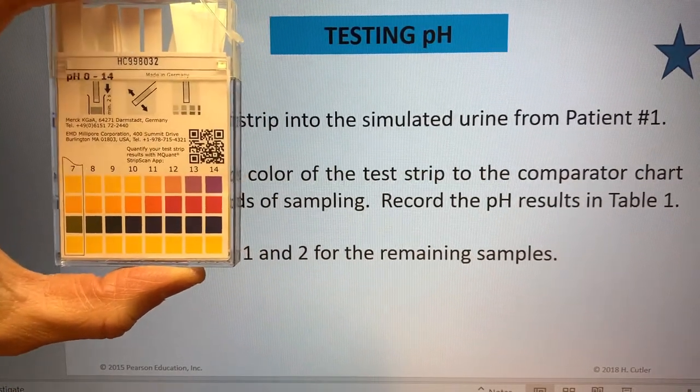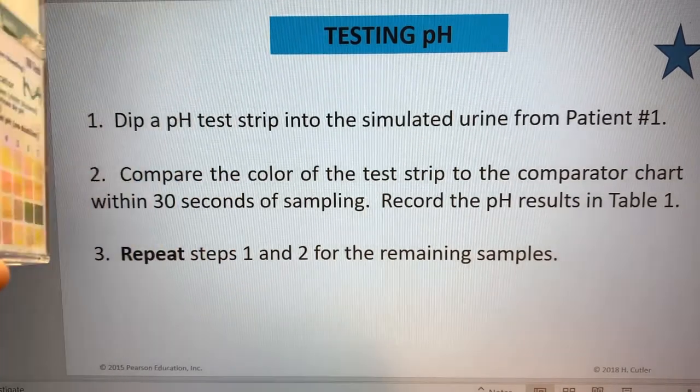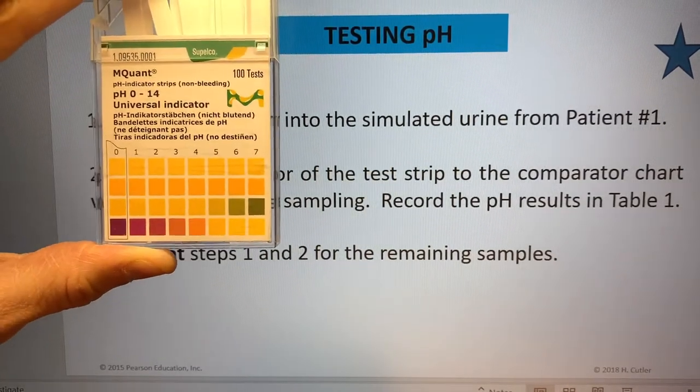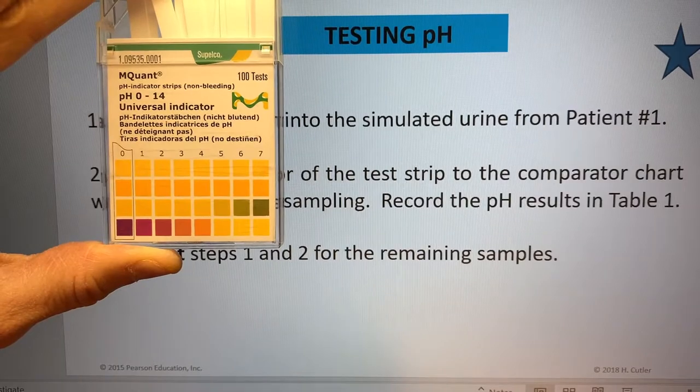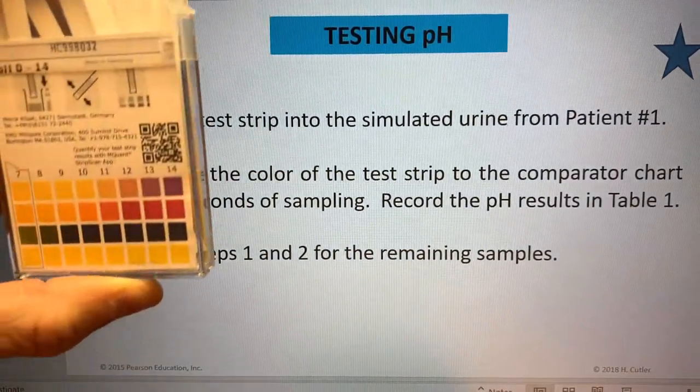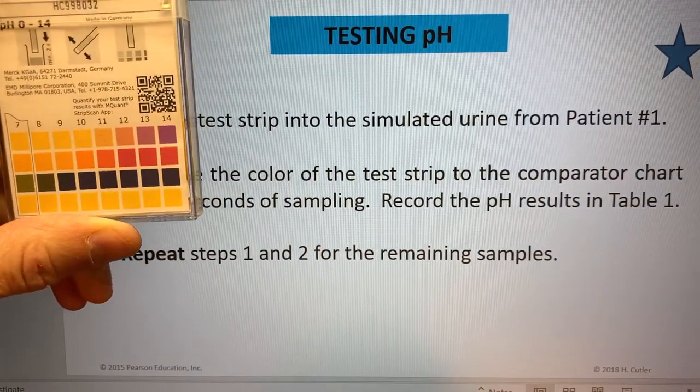So here we have the box, here are the basic numbers and colors, and here are the acidic numbers and colors, 0 through 7, and then again for basic we're 7 through 14.